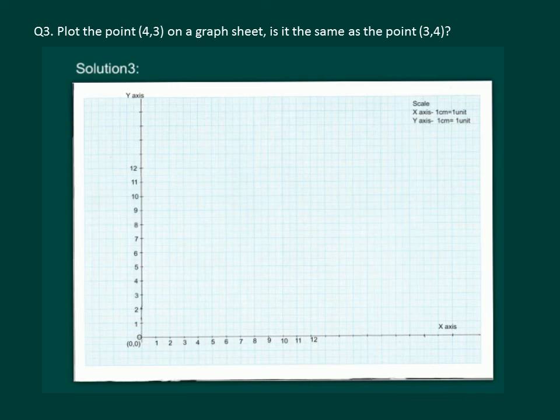Let us read the question. Plot the point 4,3 on a graph sheet. Is it the same as the point 3,4? So we have to plot points 4,3 and 3,4 and see whether they are same points or not. Let us plot. Let us first plot point 4,3, that means 4 on the x-axis and 3 on the y-axis, 1, 2 and 3. Hence we have plotted the point 4,3.